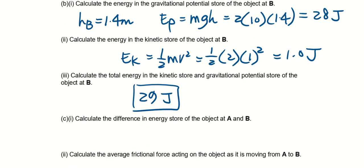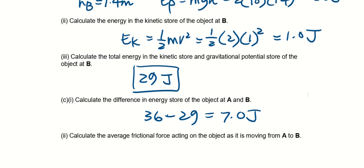So the initial energy was 36, final is 29, right? So what is the difference in energy store will be 36 minus 29, so equals to 7 joules.